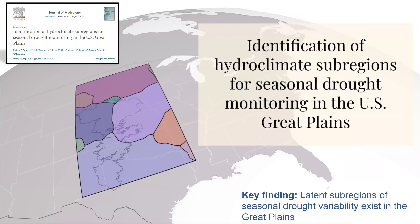In one of my dissertation projects I looked at how drought varies across space and time in the Great Plains. One of the key findings was the existence of latent subregions across the Great Plains that vary in size and by season.